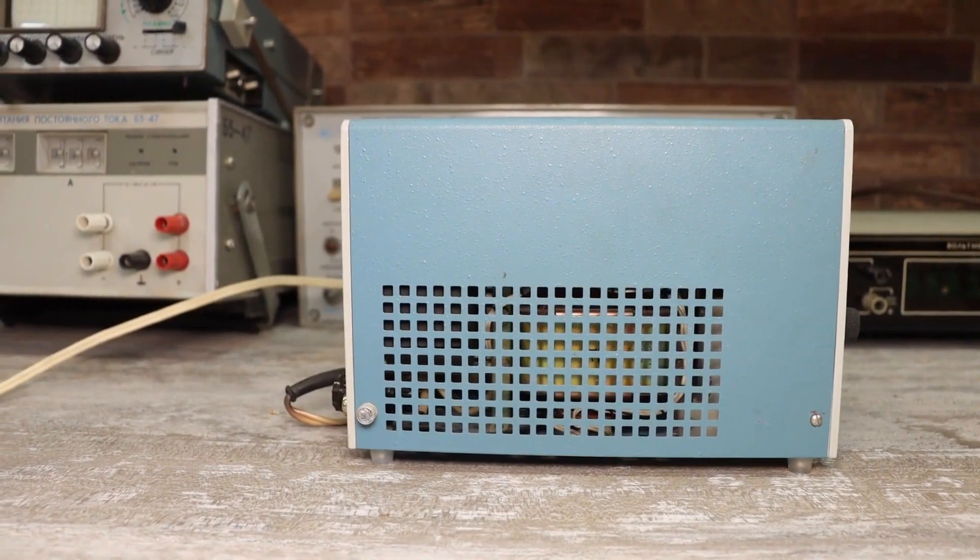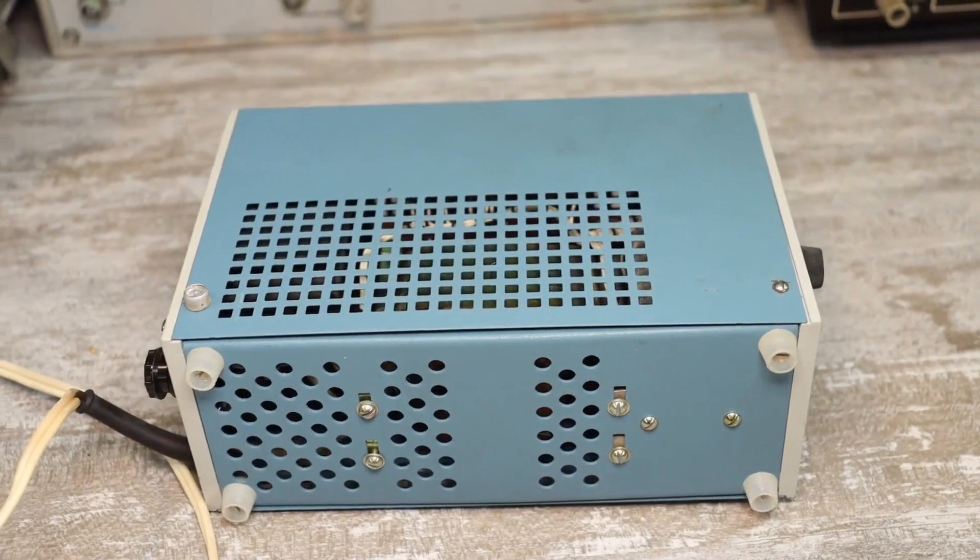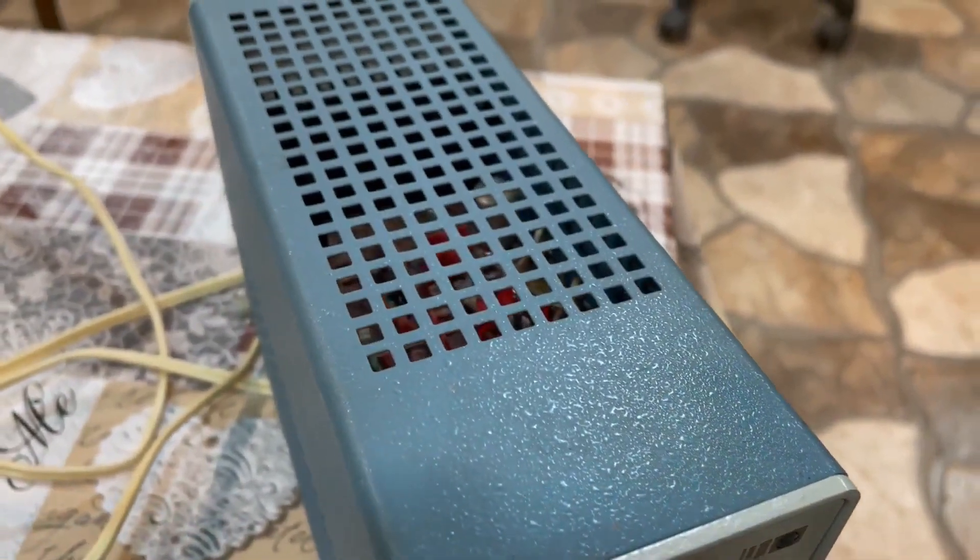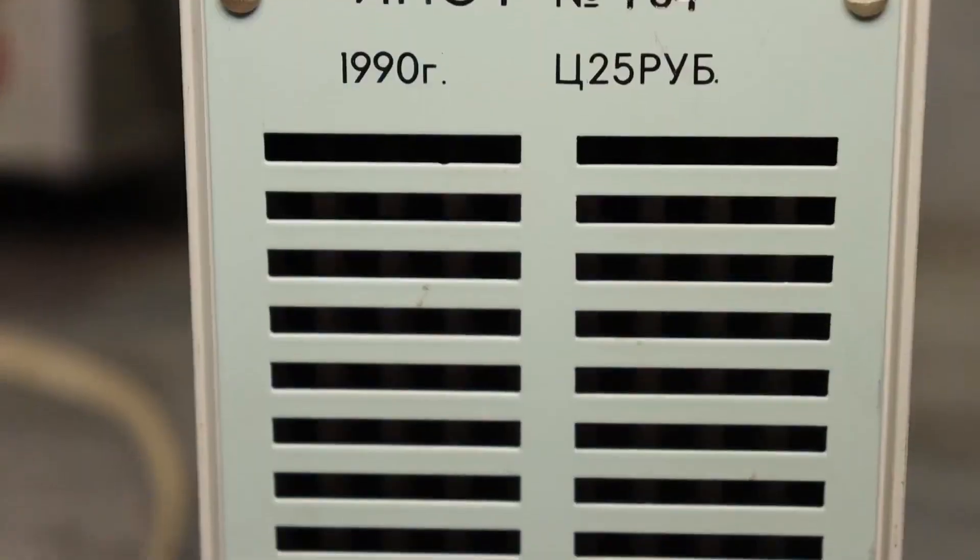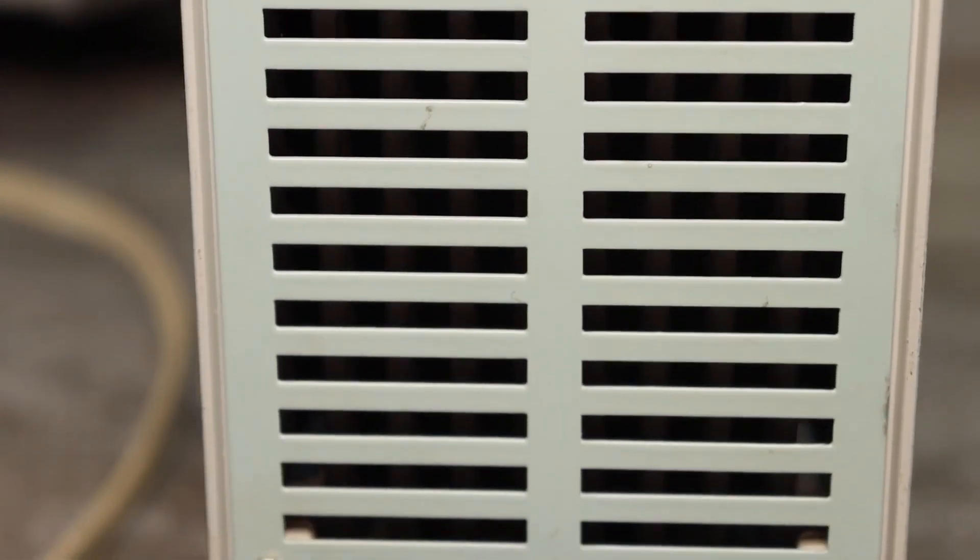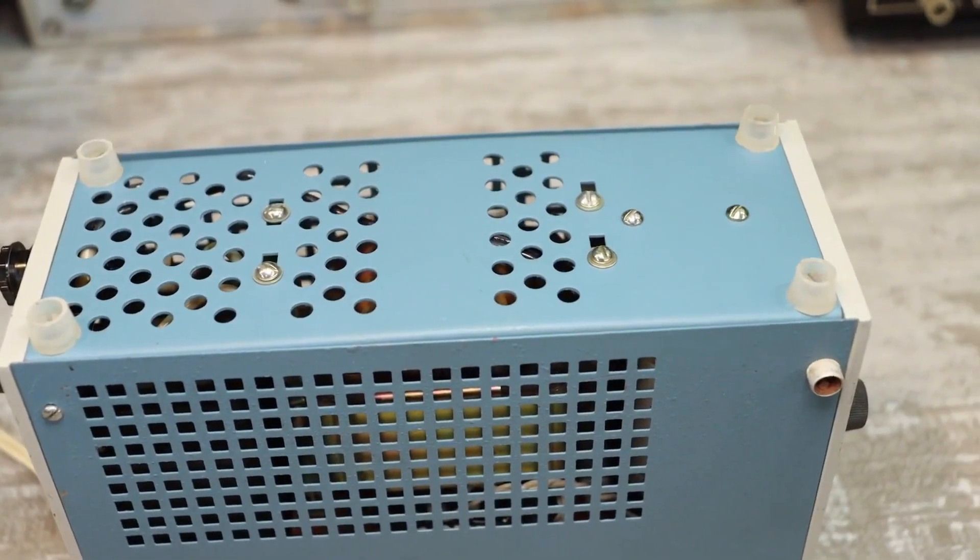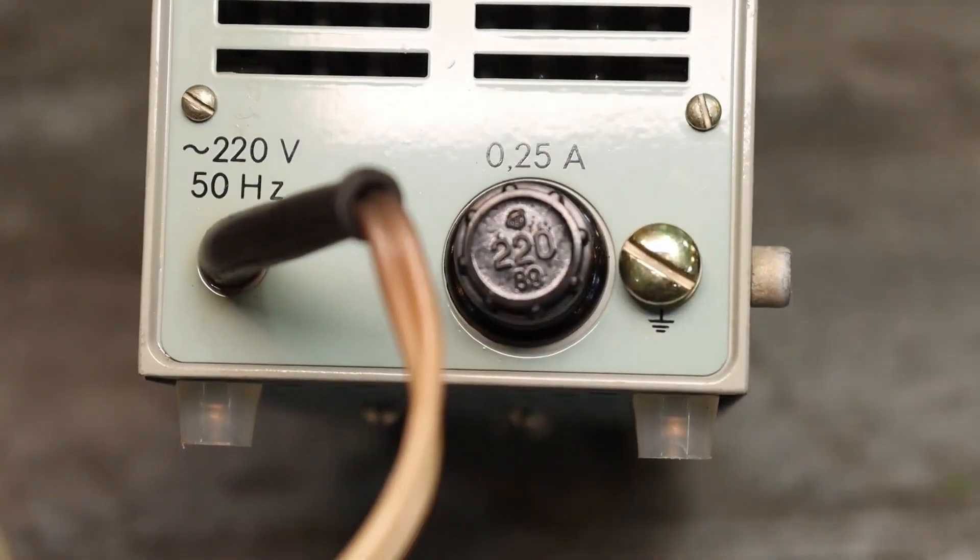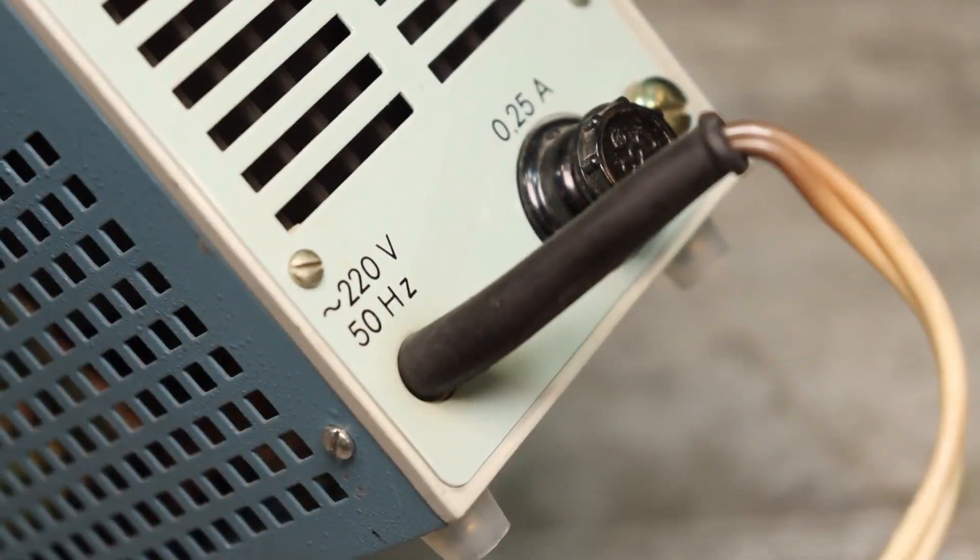The device's casing is made of sheet metal but it has a nice paint job. The cover has a bunch of holes for natural cooling. You can also see them on the back panel and at the bottom of the casing. At the back there's a fuse compartment, a grounding terminal, and a power cord.